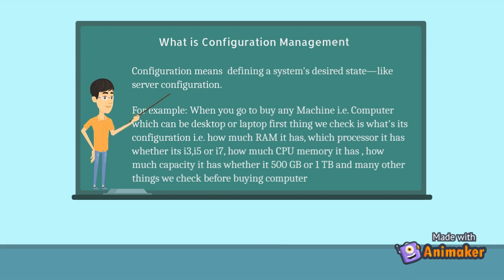Configuration means defining a system's desired state, like server configuration. For example, when you go to buy any machine — a computer which can be a desktop or laptop — the first thing we check is what's its configuration: how much RAM it has, which processor it has whether it's i3, i5 or i7, how much CPU memory it has, how much storage capacity it has whether 500 gigabytes or 1 terabyte, and many other things we check before buying a computer.